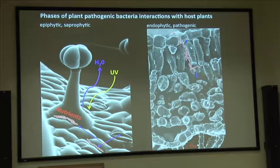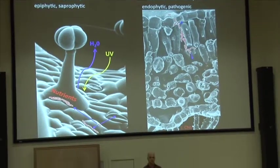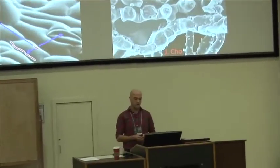We have a fairly good understanding of their life phases in association with their host plants—both epiphytically, where they're not really causing any disease or harm to the host plant, but if they are able to then invade into the leaf interior, if there's a compatible interaction with their host plant, they can replicate and cause disease there. We know a number of things that regulate bacterial populations in this environment, such as desiccation stress and UV irradiation, as well as the ability to access nutrients.